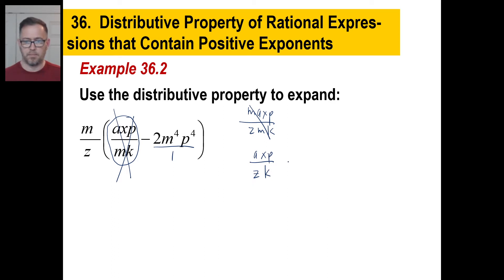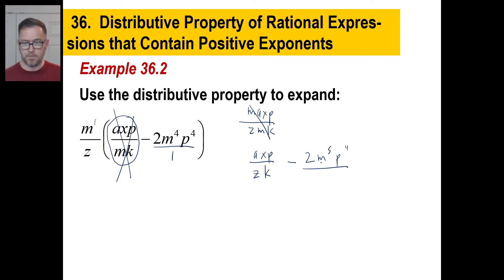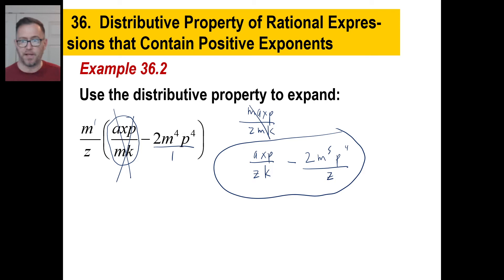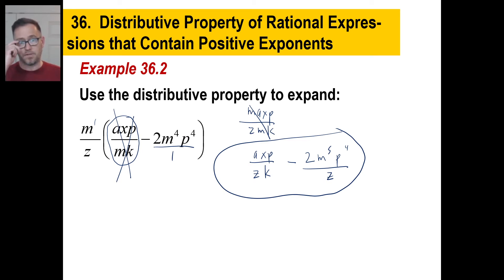Let's do the second term — minus. One times two is still two. M to the first times M to the fourth is M to the fifth. That's going to be P to the fourth. Over here, Z times one is Z. We're done — we don't have to do anything else. All we've done is an addition problem. Do you know how to add one and four to get five? That's all you're doing. Do you know how to multiply fractions — numerators and denominators? Yes.